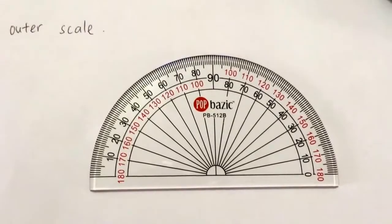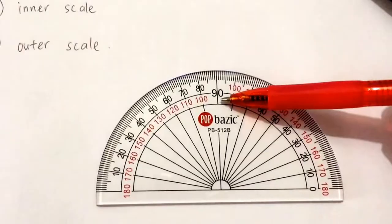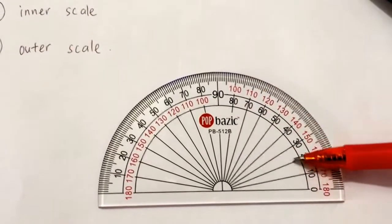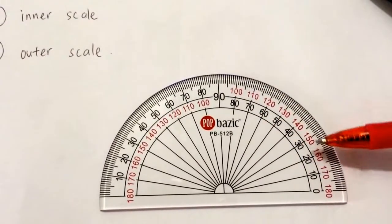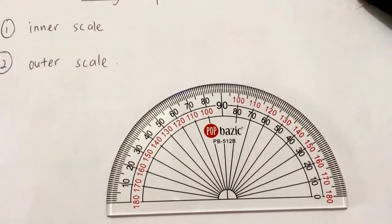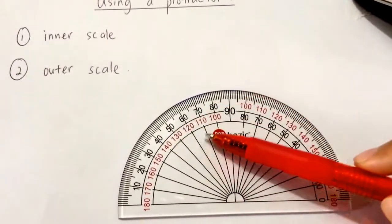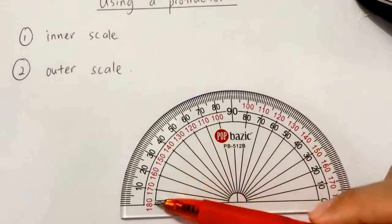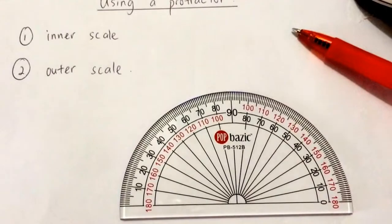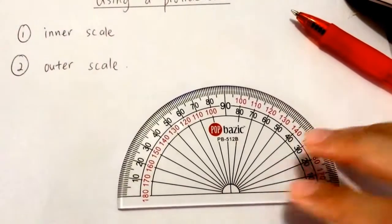So that means if you're reading the numbers from the inner scale, the inside, you can ignore all the numbers on the outside. And the same thing - if you're reading the numbers on the outer scale, you can ignore all the numbers on the inner scale. You only use one scale at a time. Next, we will take a look at how to measure angles using a protractor.